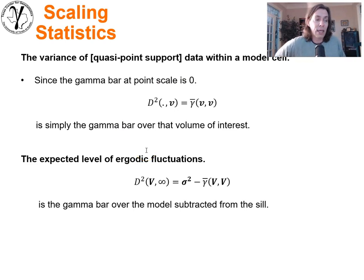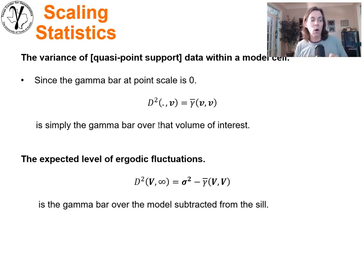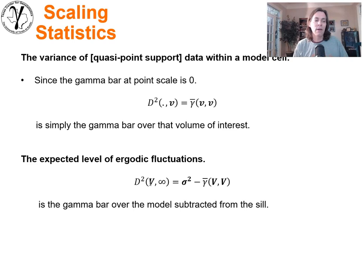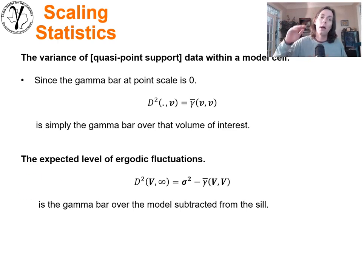The expected level of ergodic fluctuations can also be calculated using gamma bar. We're modeling with a big V volume — the entire model — but within a statistical framework that assumes an infinite domain. We can calculate the amount of statistical ergodic fluctuations as the dispersion variance of big V within infinity. This equals gamma bar(infinity, infinity) minus gamma bar(V,V). If the variogram is modeled to the sill at infinity, that integration results in the sill, and subtracting gamma bar(V,V) gives the expected level of ergodic fluctuations. Data conditioning may further constrain it, but this provides an upper bound.